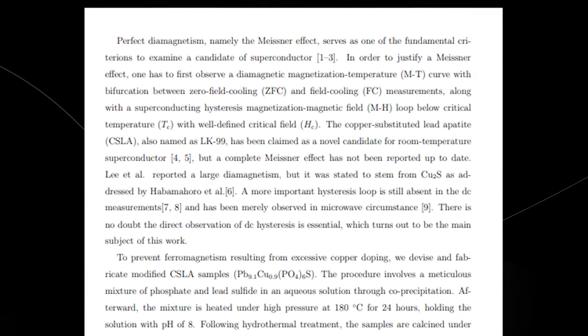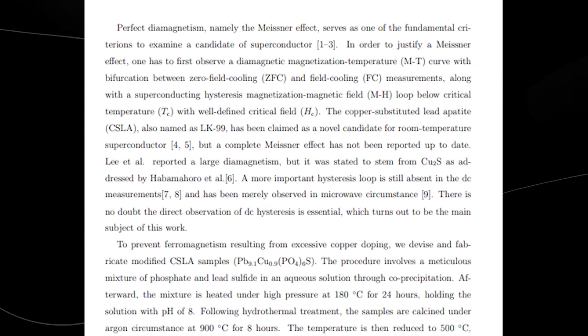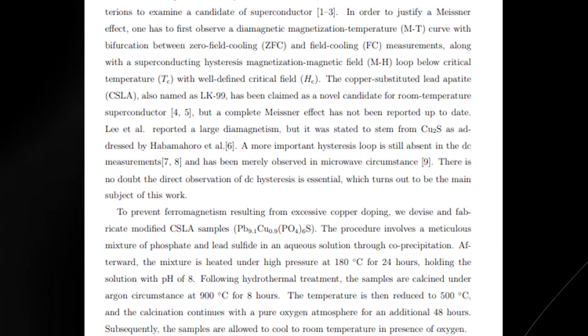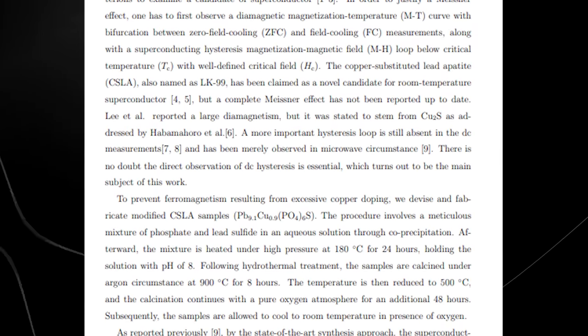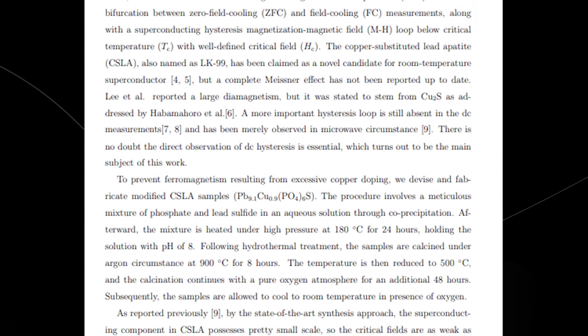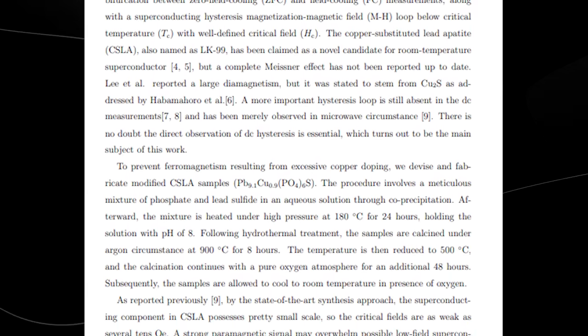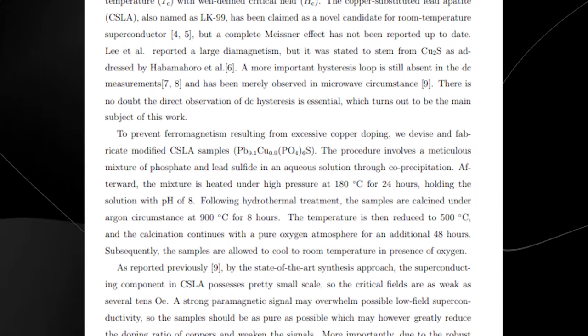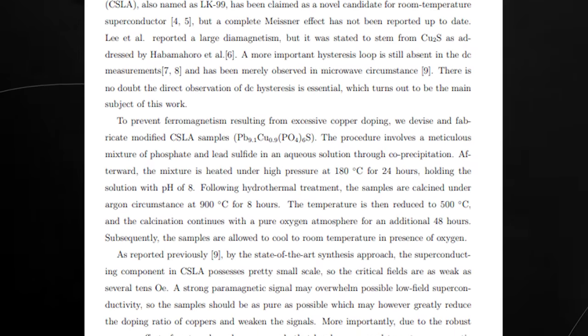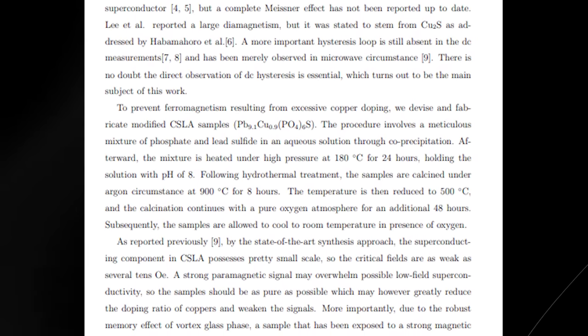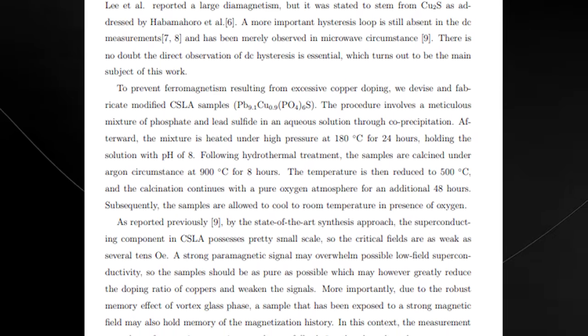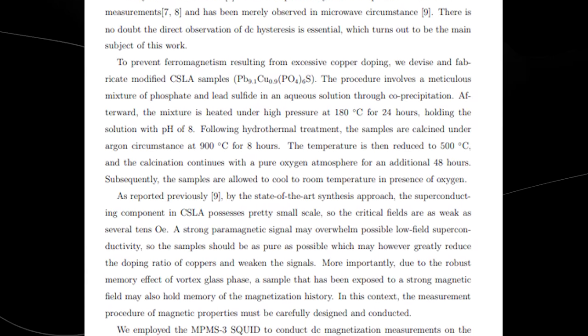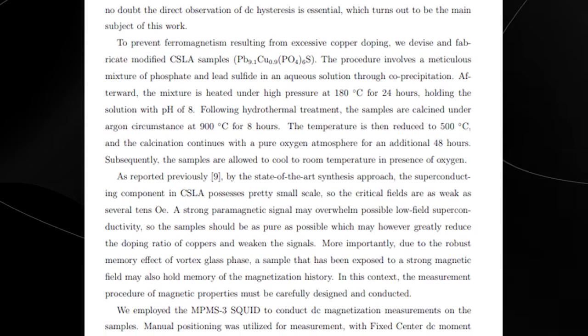This part of the paper explains that for a material to be considered a superconductor, it must show the Meissner effect, which is perfect diamagnetism. This involves specific behaviors in magnetic field and temperature tests. LK-99, a type of copper-substituted lead apatite, is a potential room temperature superconductor, but previous studies haven't fully demonstrated this effect. The paper details the creation of modified LK-99 samples to avoid unwanted magnetic properties and describes the precise steps taken in their experimentation to observe these superconducting properties.